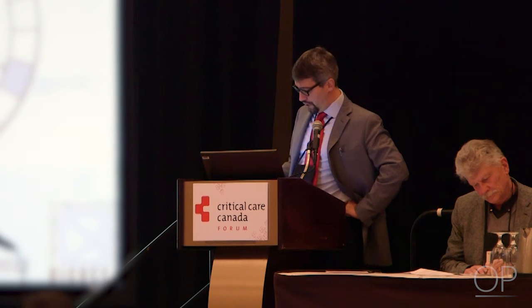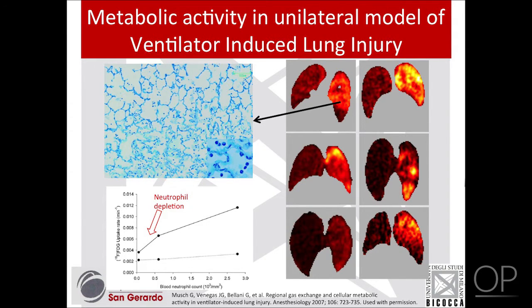Inflammatory cells, and particularly neutrophils, are also avid uptakers of FDG. In this study done with Dr. Musch and published in Anesthesiology at the time of my fellowship in Boston, we did a unilateral model of ventilator-induced lung injury. It was a very tough model for the animals, carried on in the right lung. You can see how the right lung is picking up glucose and showing up brightly — because it is full with neutrophils, and all the neutrophils are picking up FDG. If we induce a neutrophil depletion, what we see is that the FDG signal goes almost to zero, corresponding to a decrease of the circulating blood cells.